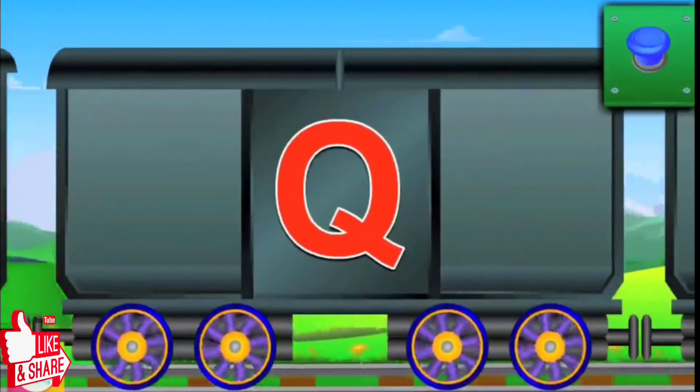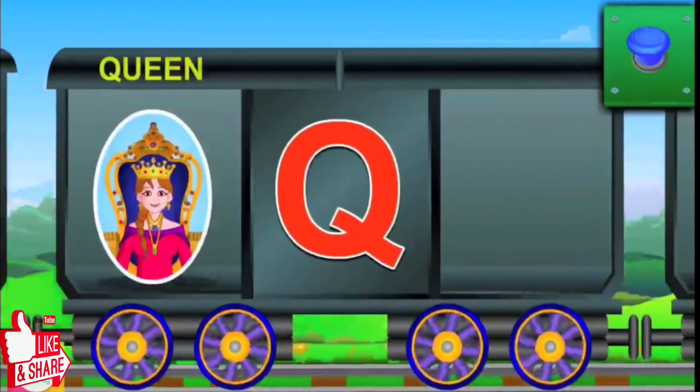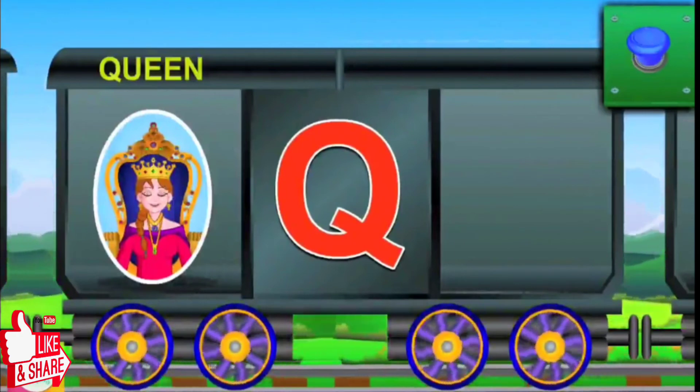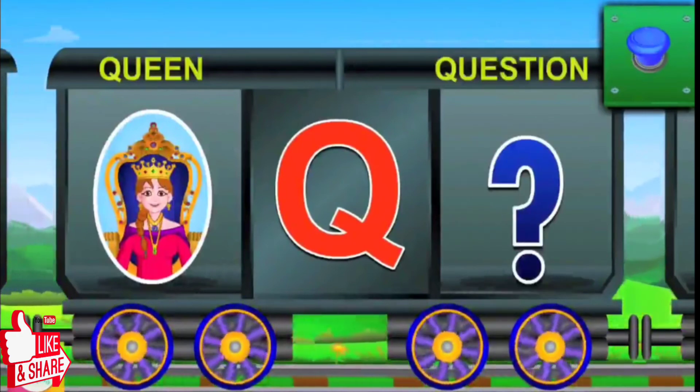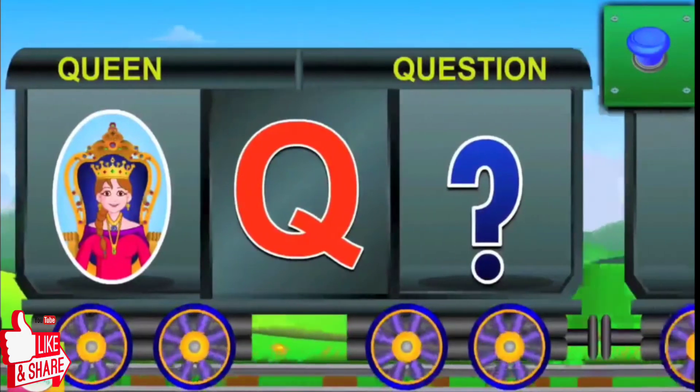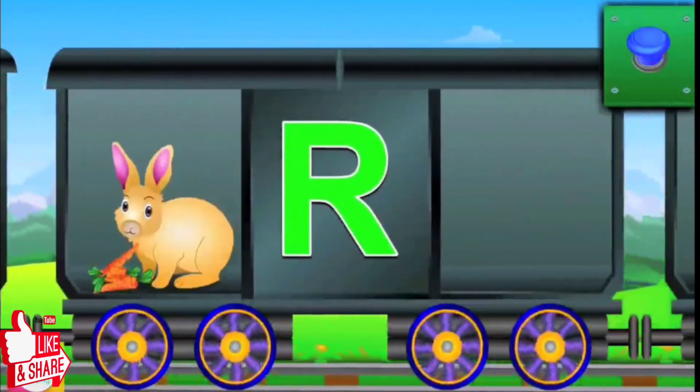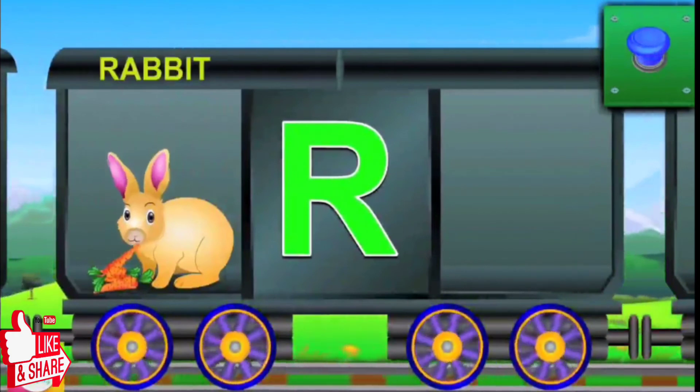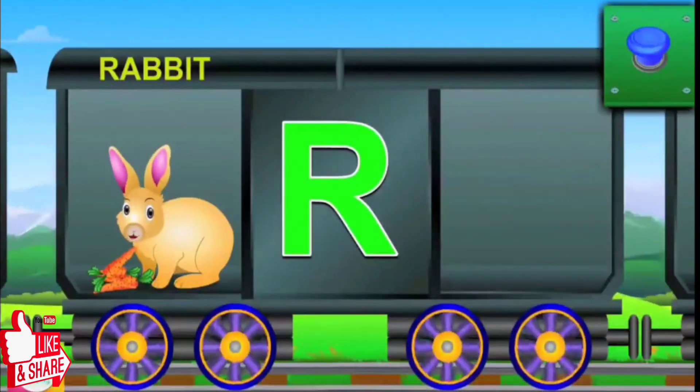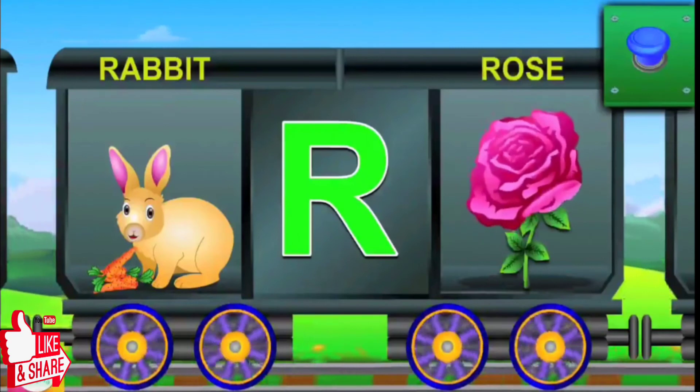Now that's Q. Q for queen, and queen is beautiful. Q for question, and the symbol is this. It's R now. R for rabbit, and the rabbit eats carrots. R for rose, and the rose is pink.